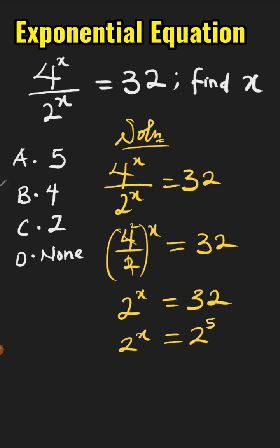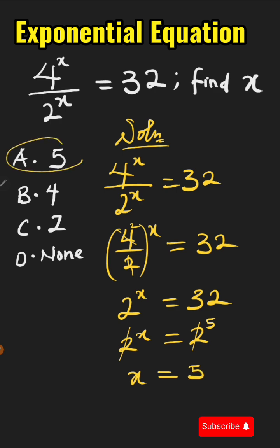Now the next step, we compare the bases. We have base 2 on the right-hand side and base 2 on the left-hand side. Then we compare the powers, and x equals 5. The correct option is A.